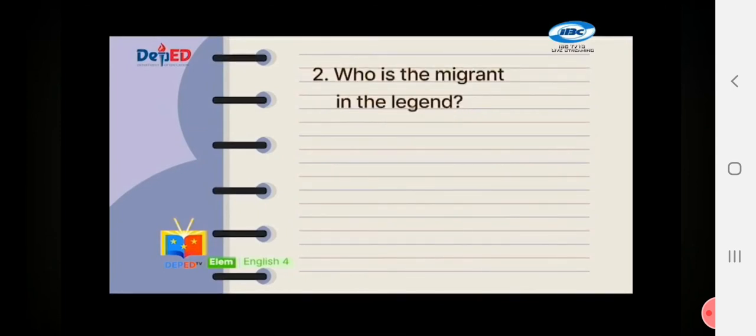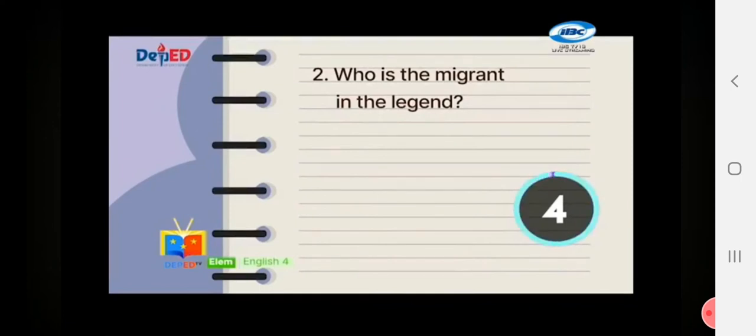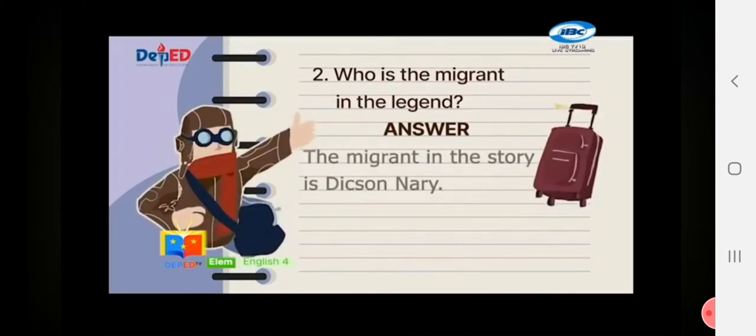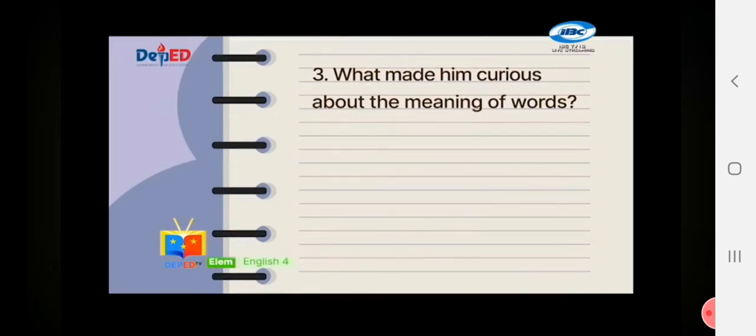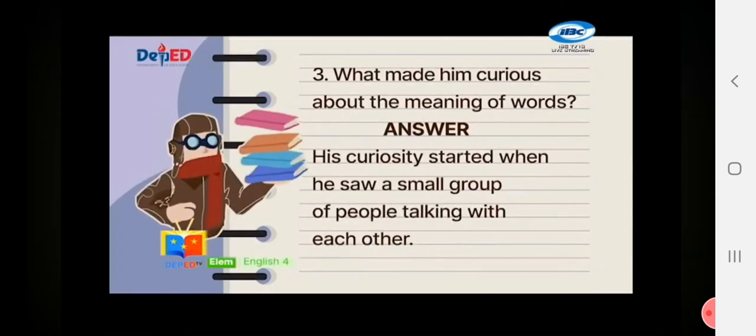Question number two, who is the migrant in the legend? The migrant in the story is Dixonary. Next question, what made him curious about the meaning of words? His curiosity started when he saw a small group of people talking with each other and wondered what they were talking about.